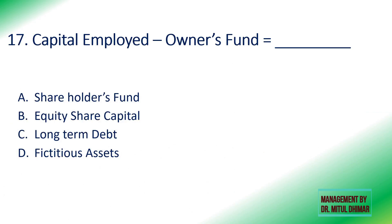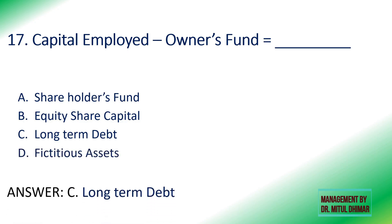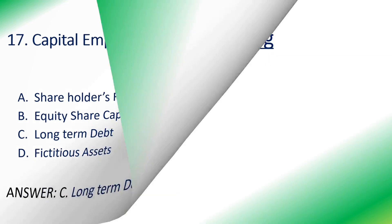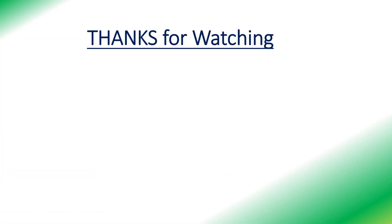Seventeenth: capital employed less owners' fund equals shareholders' fund, equity share capital, long-term debt, or fictitious assets? The answer is long-term debt. Capital employed includes equity share, preference share, reserves surplus, long-term debt, less fictitious assets. Owners' fund includes equity share, preference share, reserves surplus, less fictitious assets. So the difference between the two is only long-term debt.